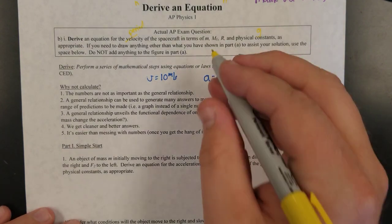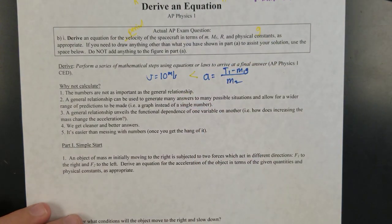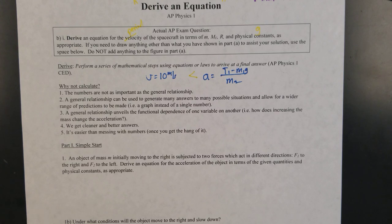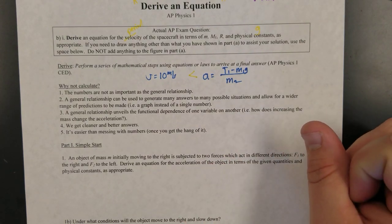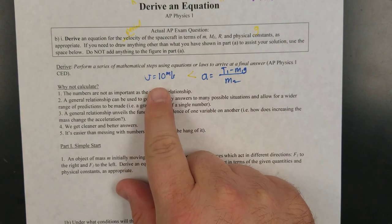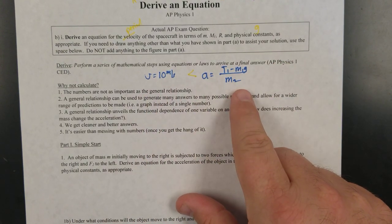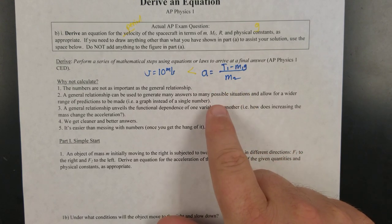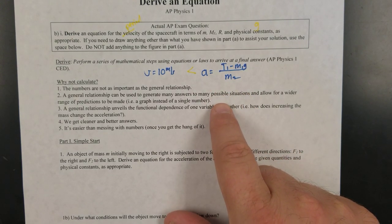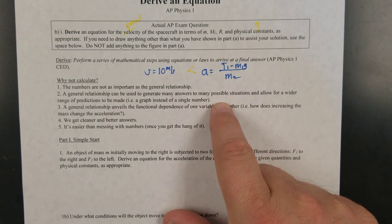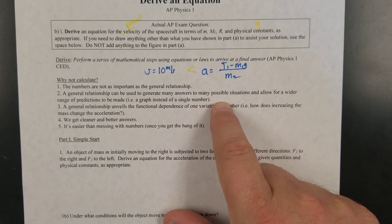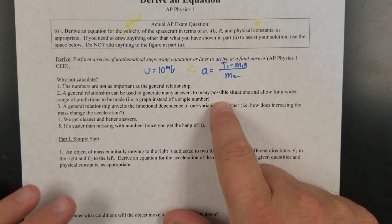So why is this answer on the right better than the answer on the left? There's a couple of different reasons. Number one, a specific numerical answer isn't as useful as a general relationship between variables. And we can use that general relationship to answer many questions and make many predictions about many possible situations.